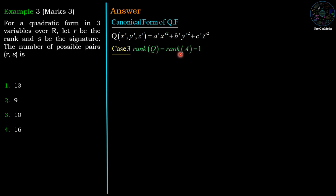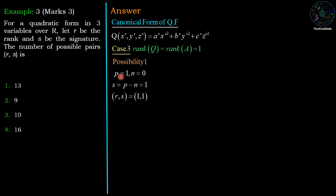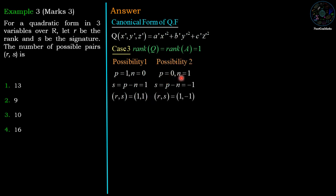Case 3: rank of A = 1. In the canonical form we have only one term. First possibility: p = 1 and n = 0 — no negative terms. S = p − n = 1, giving pair (1, 1). Second possibility: p = 0 and n = 1 — only one negative term. Signature S = p − n = −1, giving pair (1, −1). So we have 2 possible pairs for rank = 1.